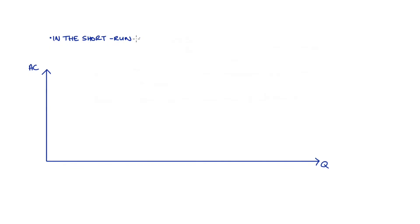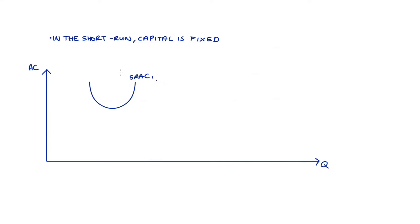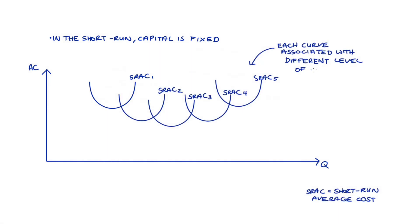In order to derive our long-run average cost curve, we first have to recognise that in the short-run, the firm faces a fixed input to production. So usually we say that capital is fixed. This means that when we draw a single short-run average cost curve, this curve shows the firm's average costs when capital is fixed at some level. There are lots of different levels of capital that the firm could hold in the short-run, and it follows that there are many different possible short-run average cost curves, each corresponding to a different level of capital. For illustration, I've drawn five short-run average cost curves here, corresponding to five different levels of capital.